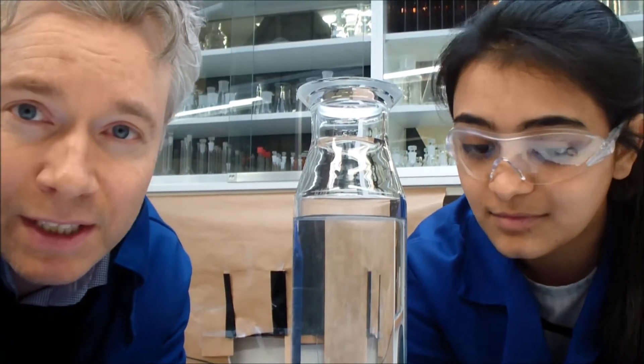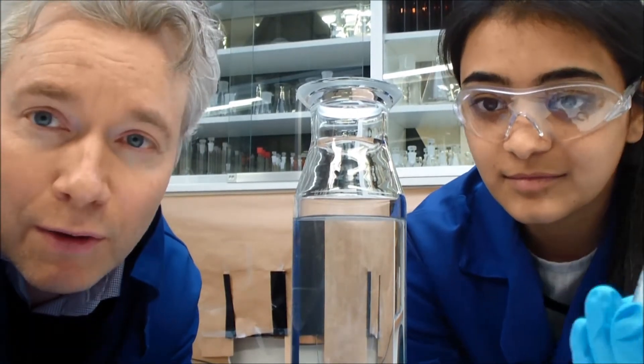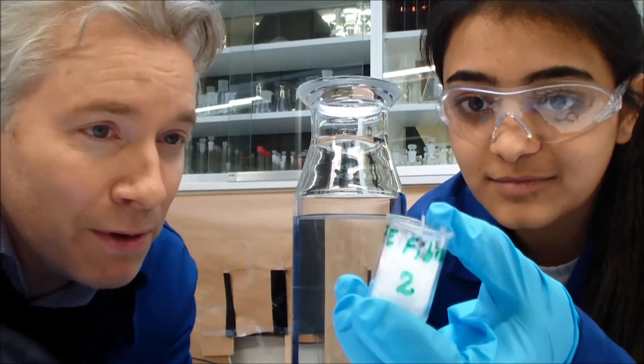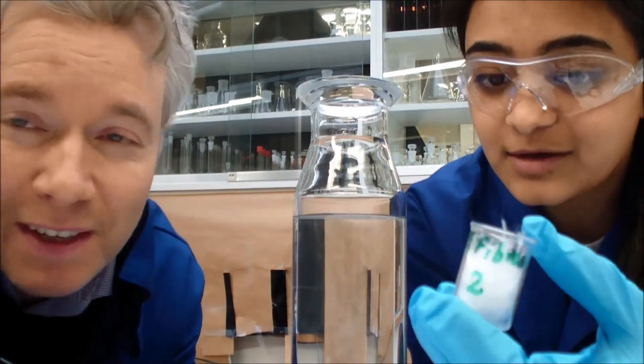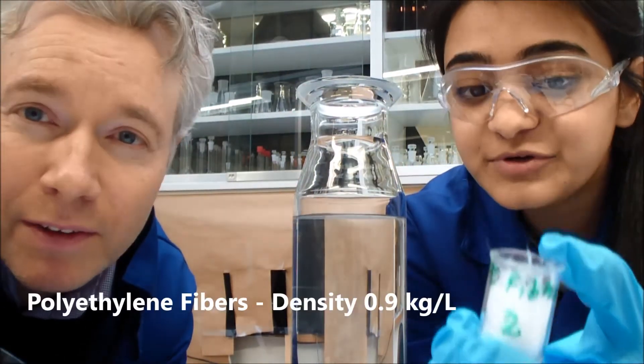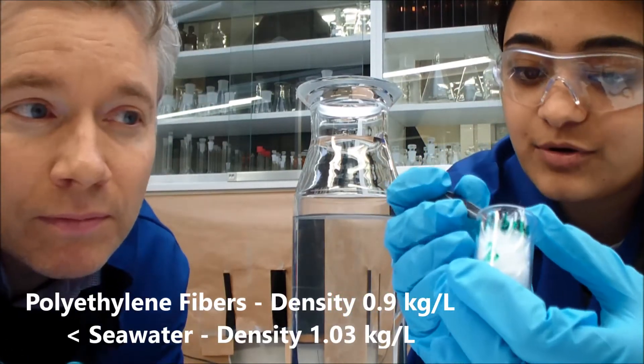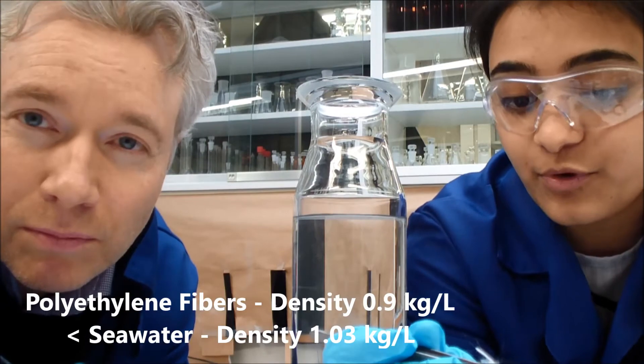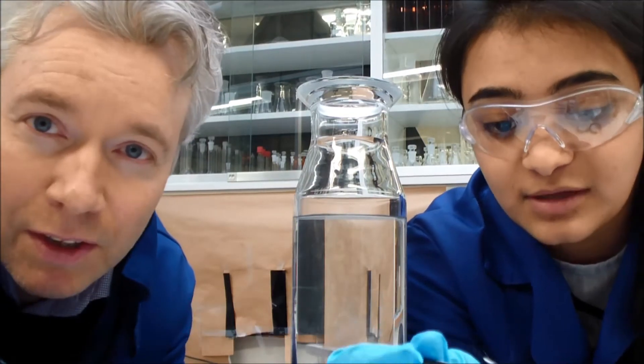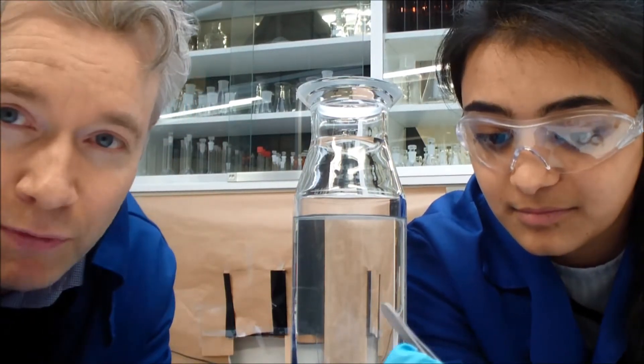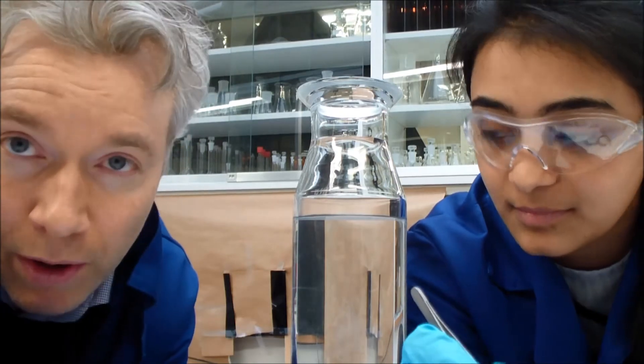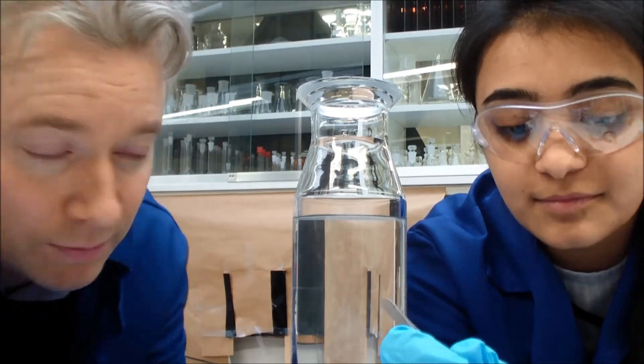Sabna has a sample of polyethylene. Polyethylene fibers have a density of 0.9, and seawater has a density of 1.03. So we expect that once we put the fibers in the water here, they should float. Let's try it.